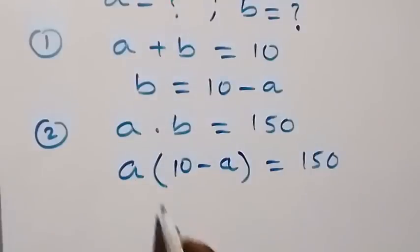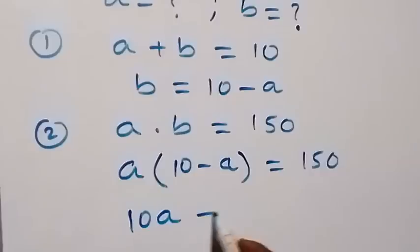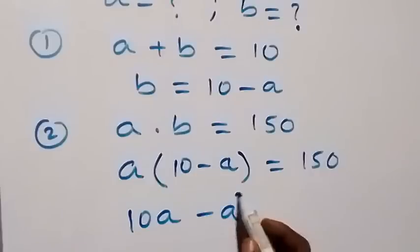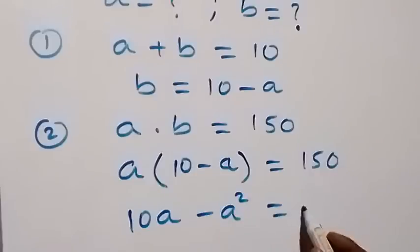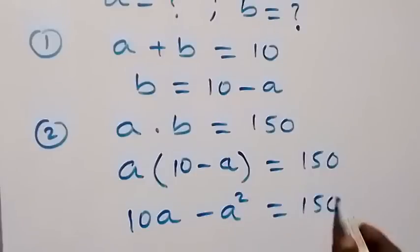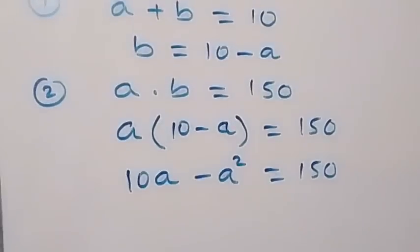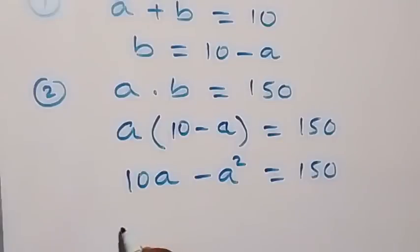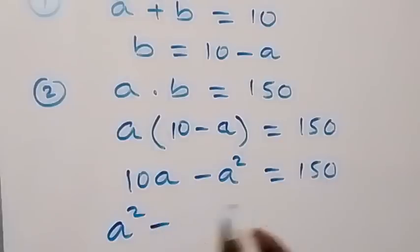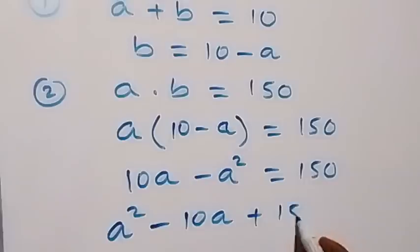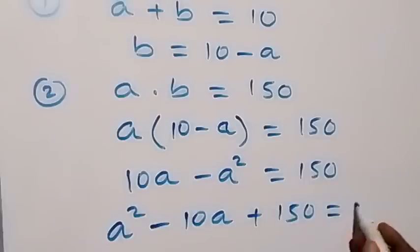When we open this bracket, this becomes 10A minus A squared equals 150. We can rearrange this to form a quadratic equation by taking everything to one side, and this becomes A squared minus 10A plus 150 equals 0.